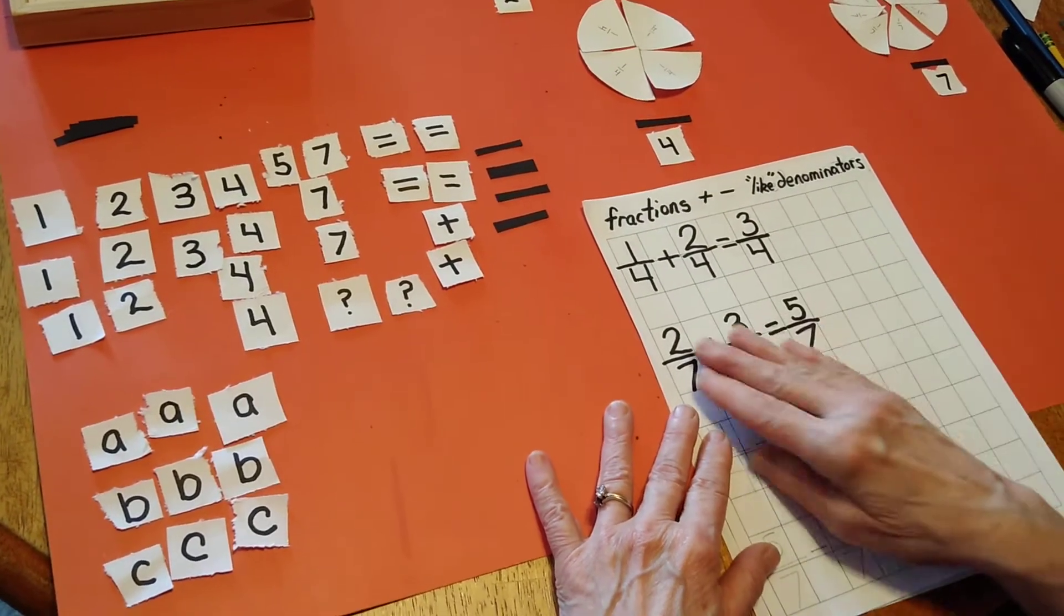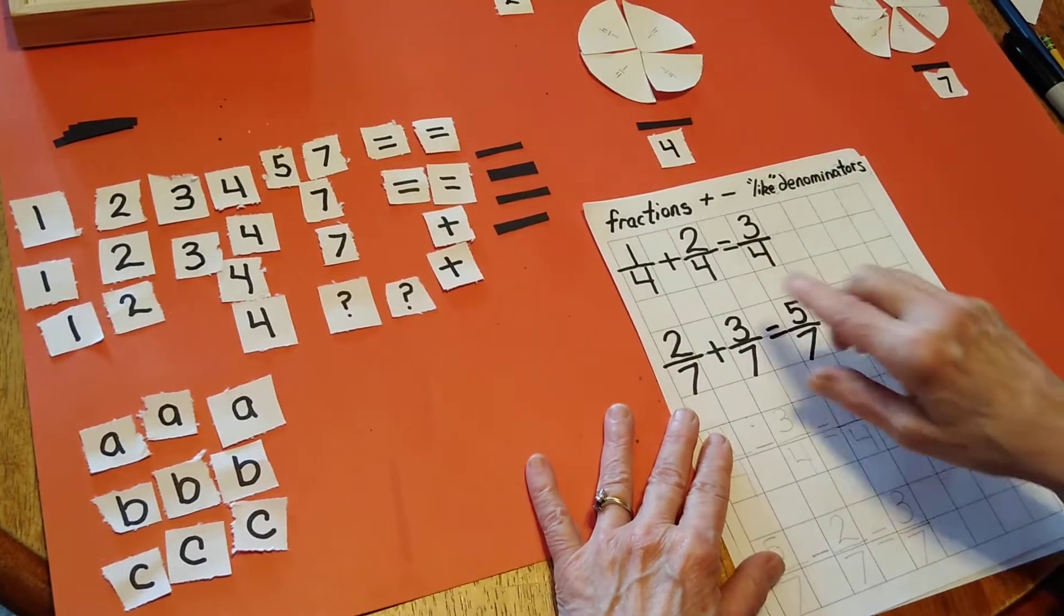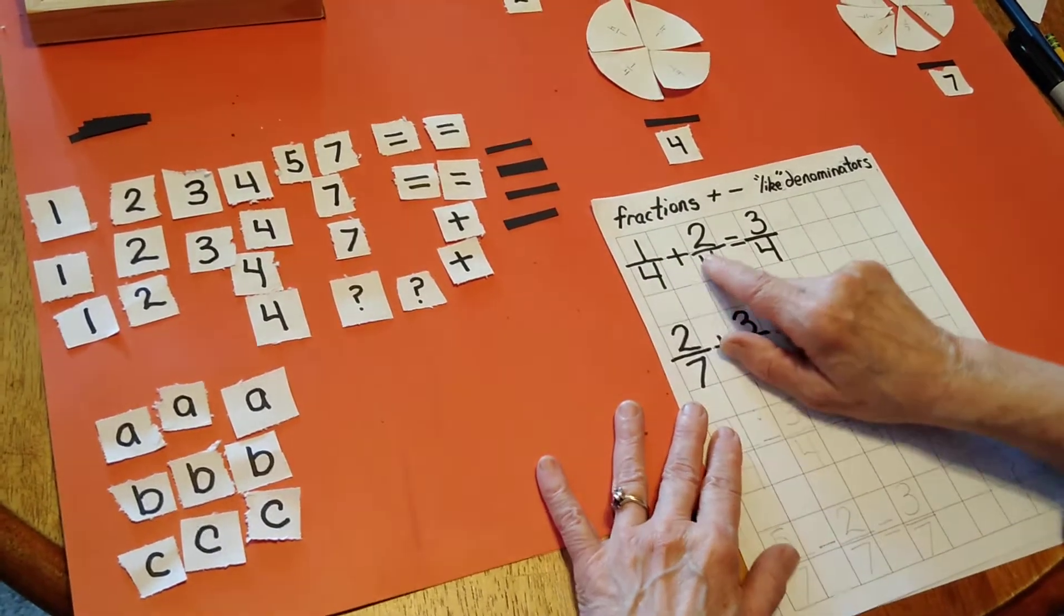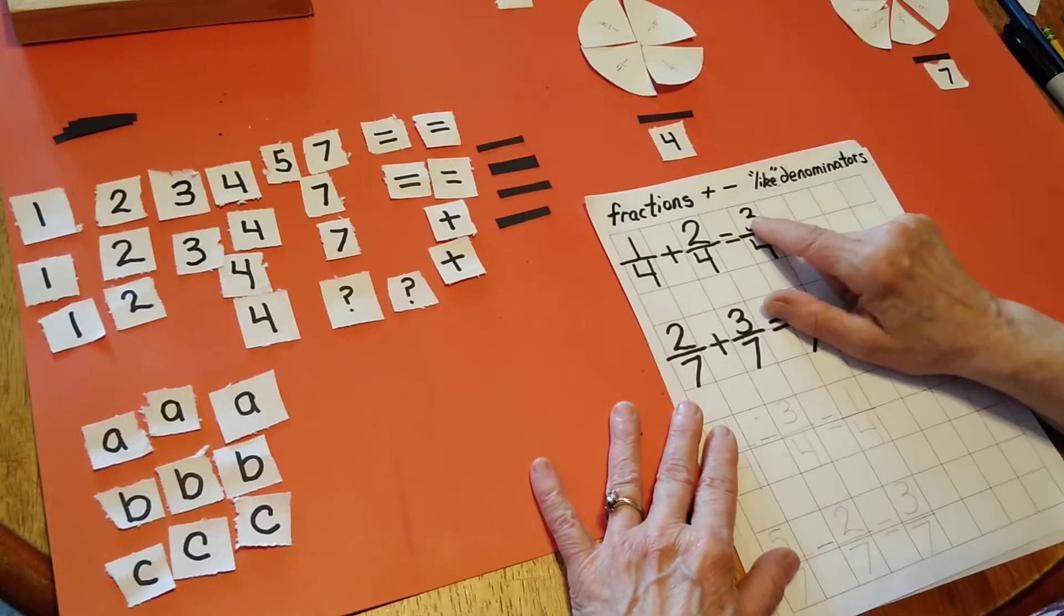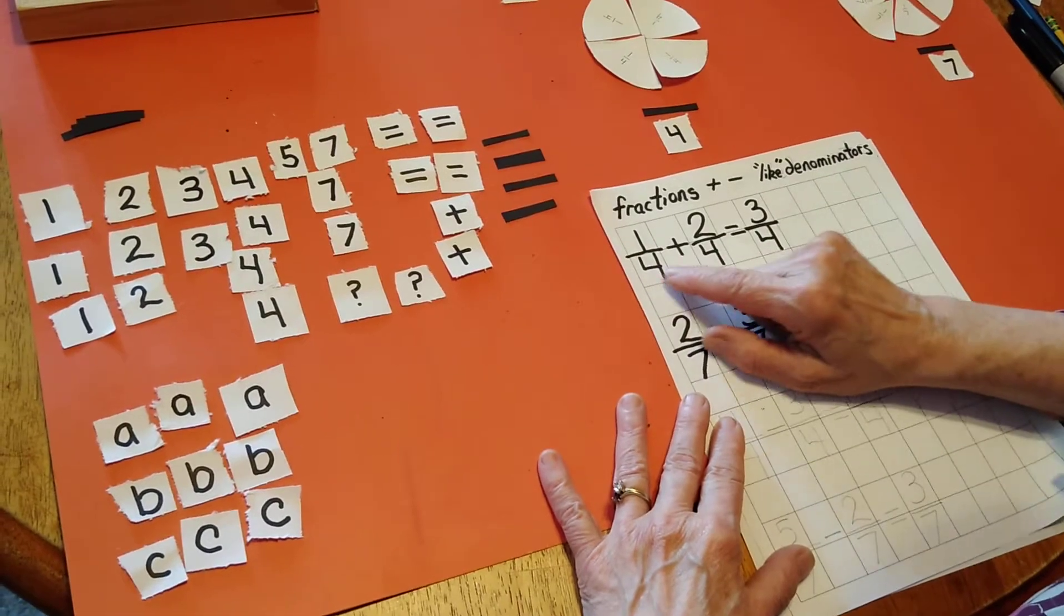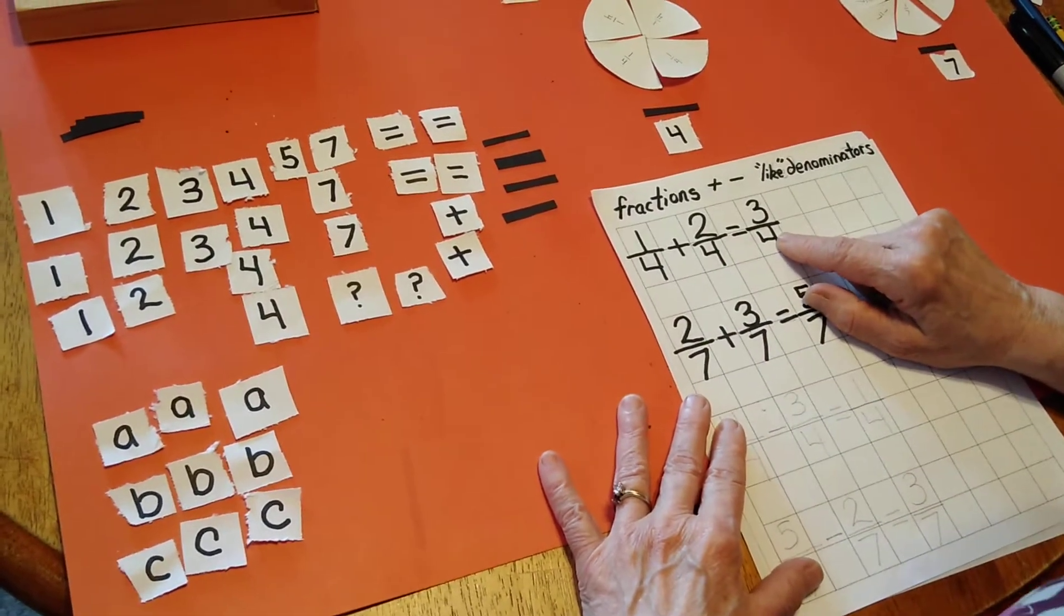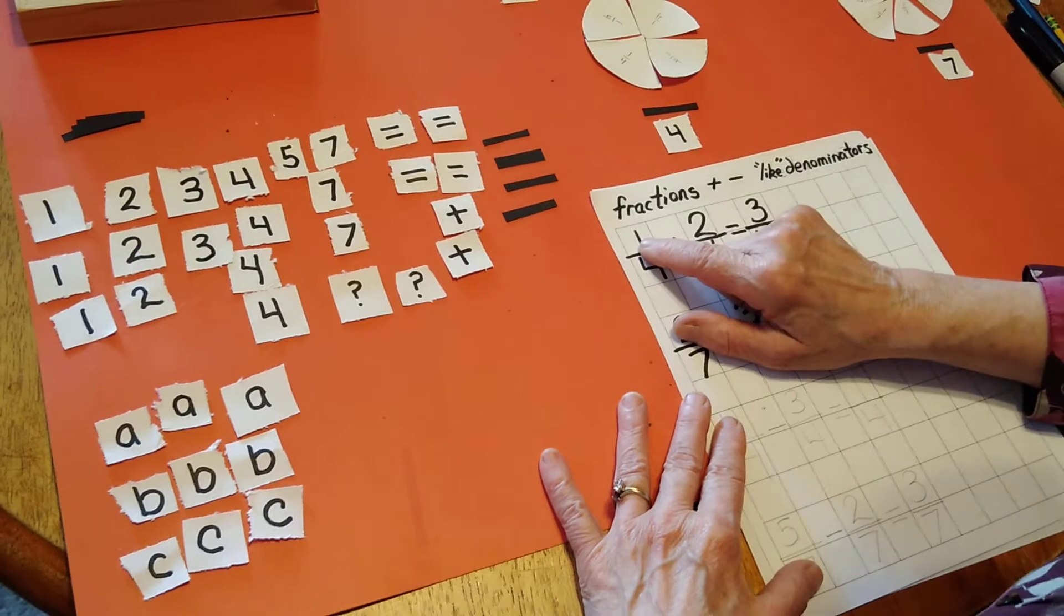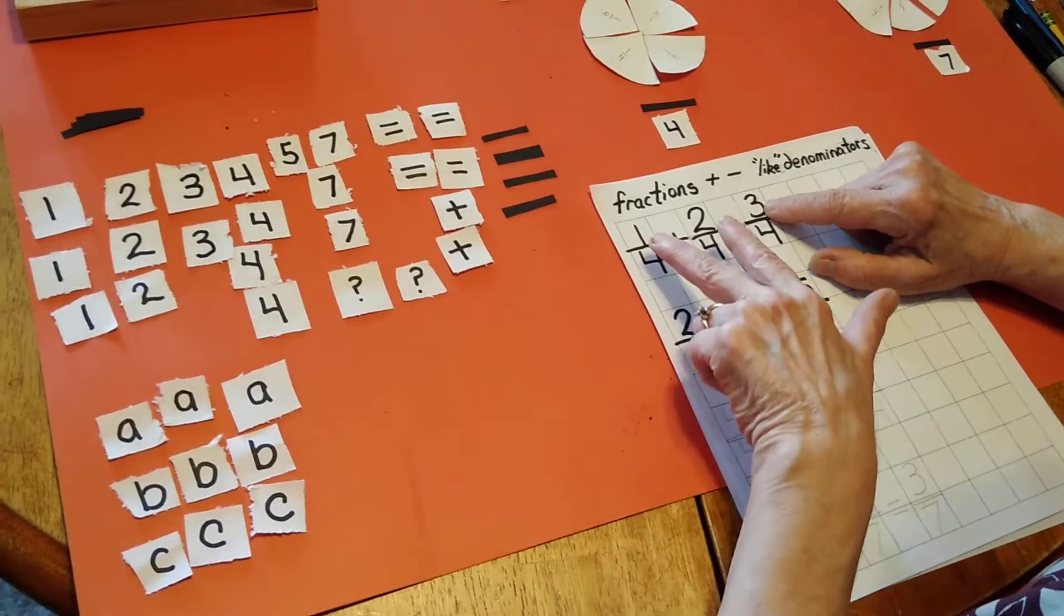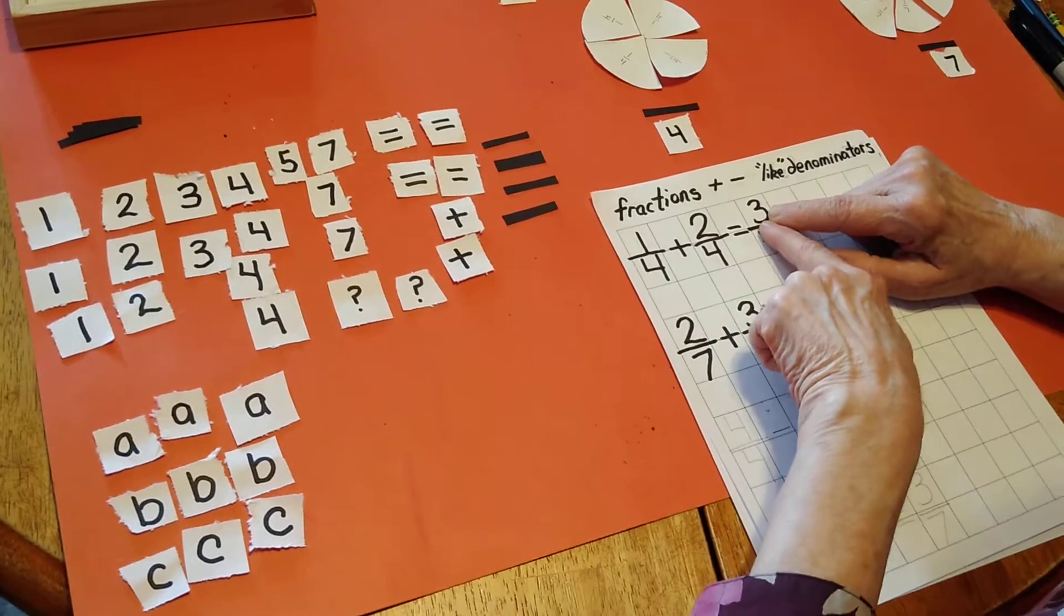Today we're going to describe what happened. We had one-fourth. When we added it to two-fourths to end up with three-fourths, our sum, the denominator stayed the same in each case. And when we look at the numerator, this number is the two numerators added together.